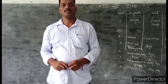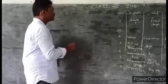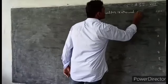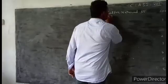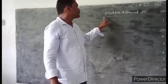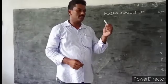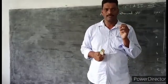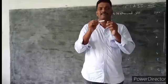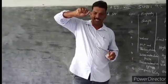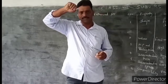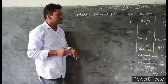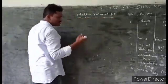Matter is around us — we have discussed that matter is around us. So what is matter? Matter is made up of very tiny particles. A duster is made up of one type of matter. Chalk is made up of matter — there are so many tiny particles in chalk, uncountable. Matter can exist in three physical states: solid, liquid, and gas.